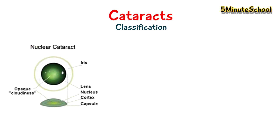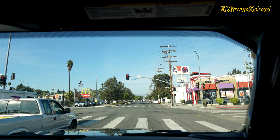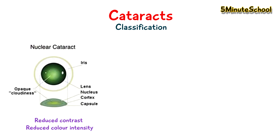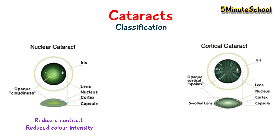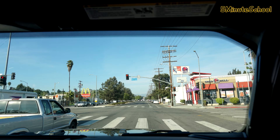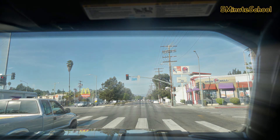The first type is called a nuclear cataract, and this is where we have reduced contrast and colour intensity, with difficulty recognising faces or car number plates. However, it's possible to maintain good reading vision for several years. Another type is cortical cataracts, and this type can cause problems with glare when driving and can also cause difficulty reading.